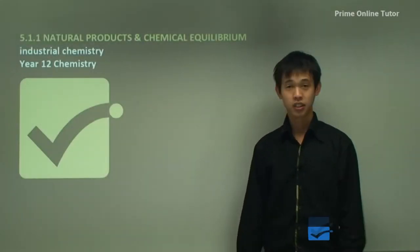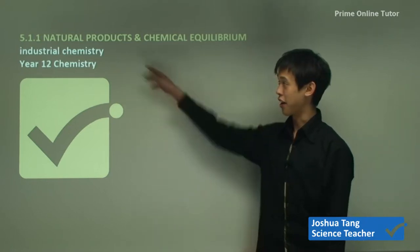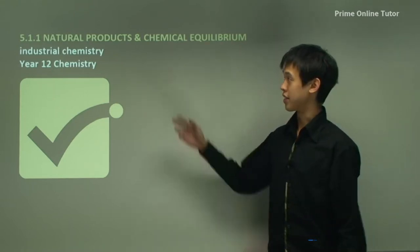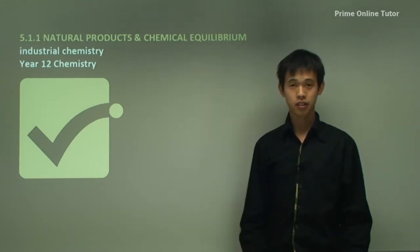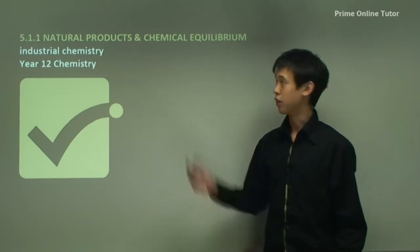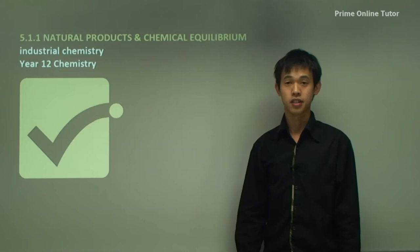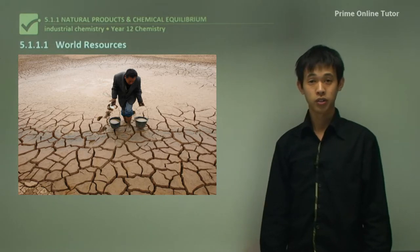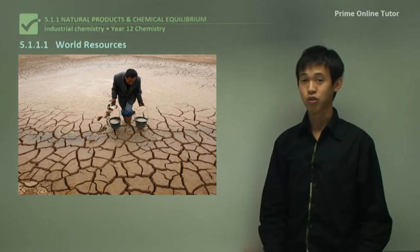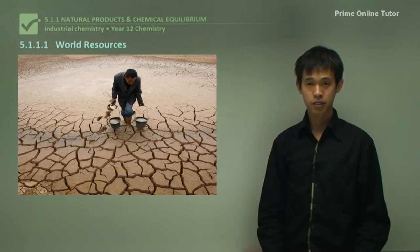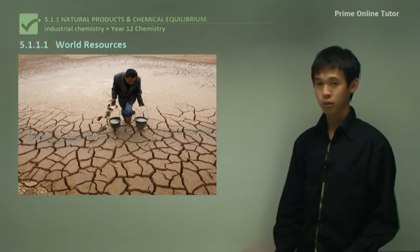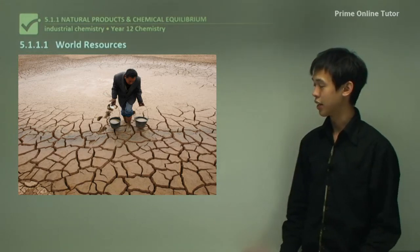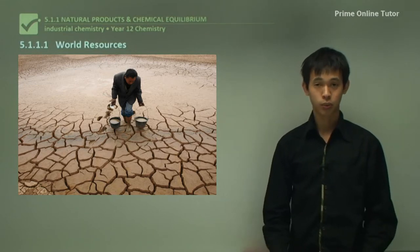Hello everyone and welcome to today's lesson - the first lesson on industrial chemistry. For those studying this option, we're going to start by looking at natural products. Because industrial chemistry is all about chemical equilibrium as well, we'll be doing a quick review on that in a few lessons' time. Today's lesson is mainly to do with world resources and how we use them as chemists and in society, since one of the major roles of chemists is to find or develop new materials when certain world resources start to decline.